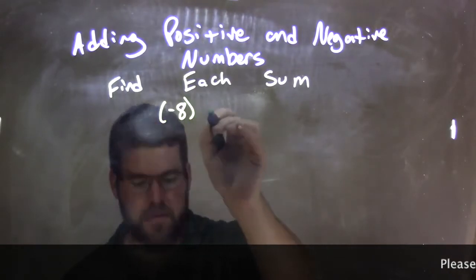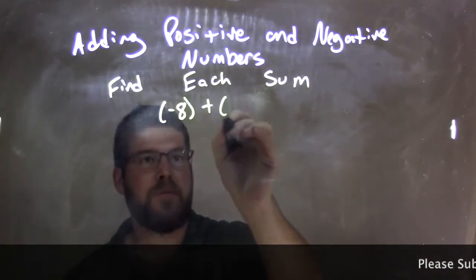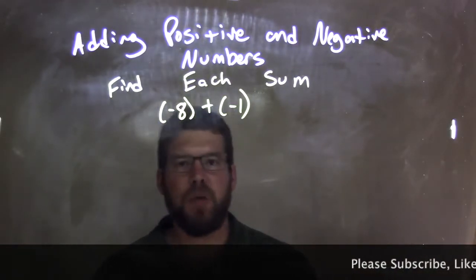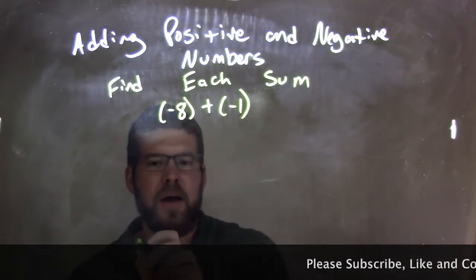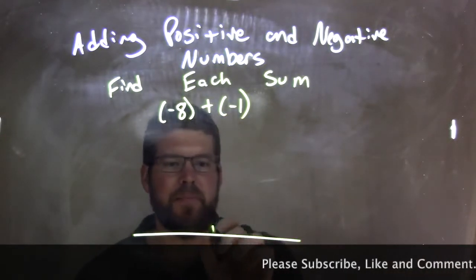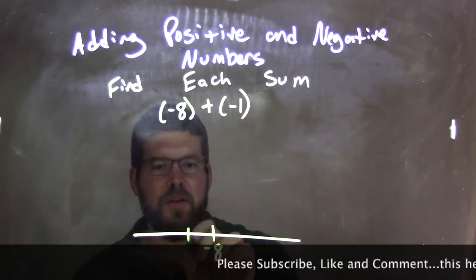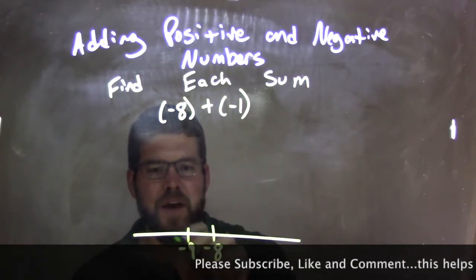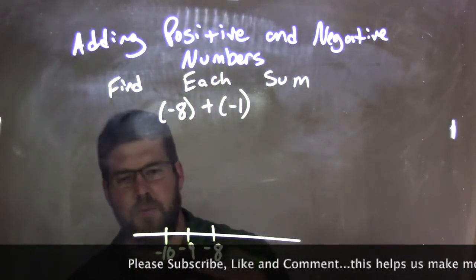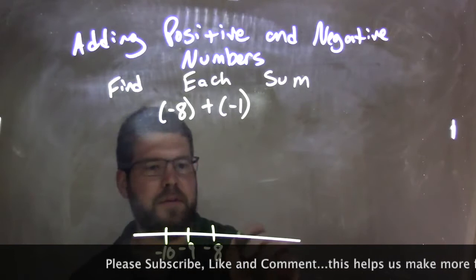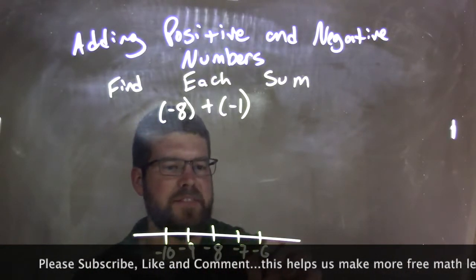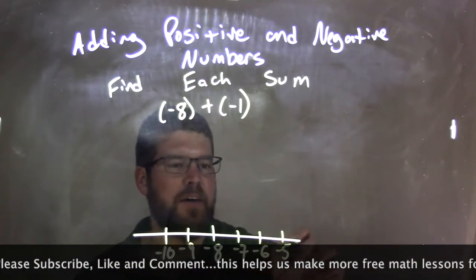Negative 8 plus a negative 1. I would start with negative 8. It helps if we draw a number line. So negative 8 is right here. To the left we have negative 9, negative 10, because those numbers are more negative — they're smaller to the left. We add negative 7, negative 6, negative 5.